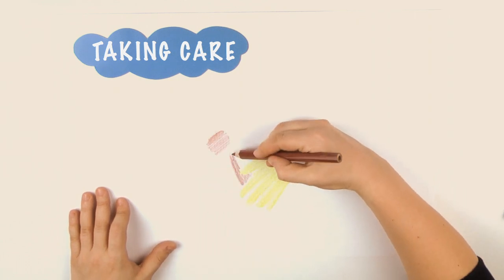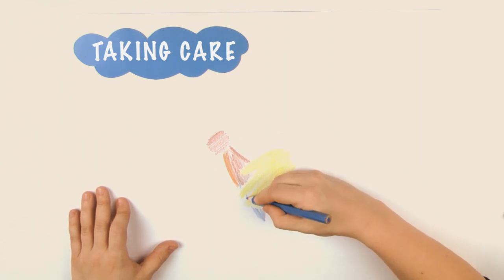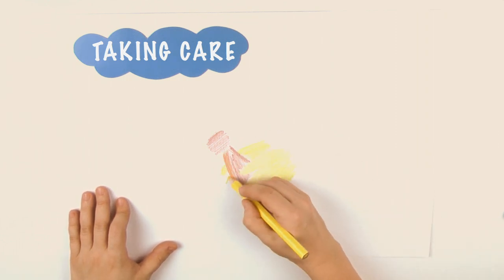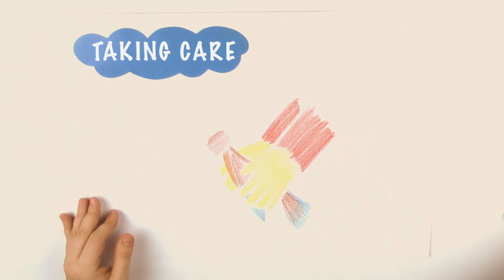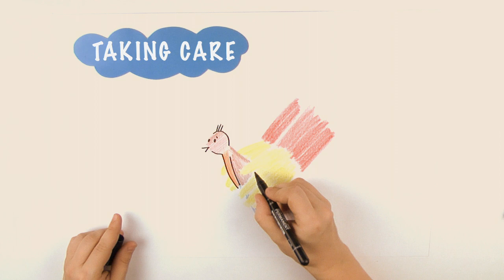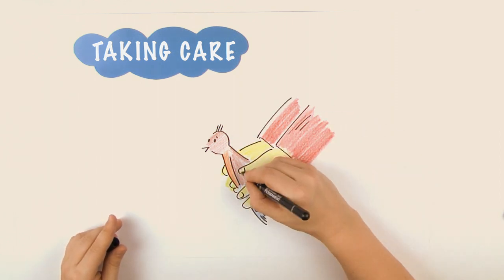День за днем Тим ухаживал за больной птицей. Он лечил ее искалеченное крыло. He gave it grains and some fresh water. Кормил ее зерном и наливал чистую воду.